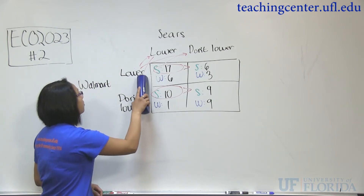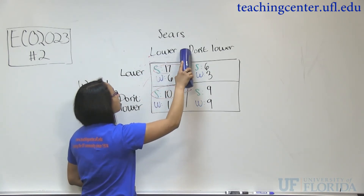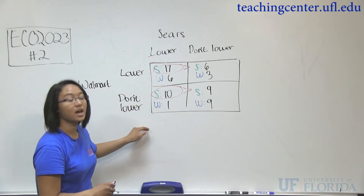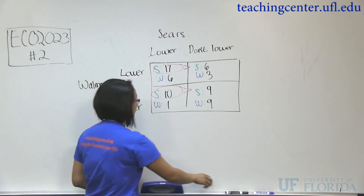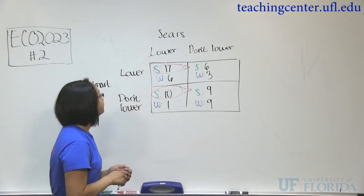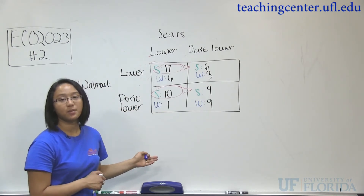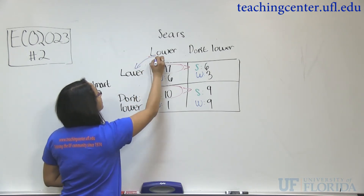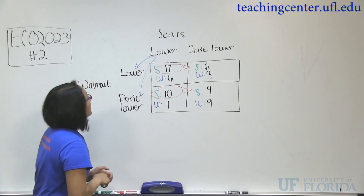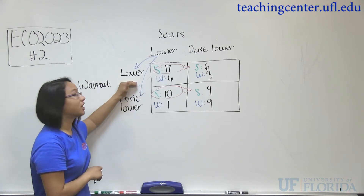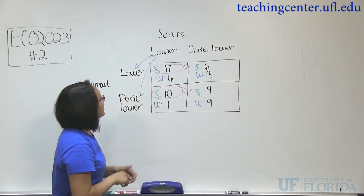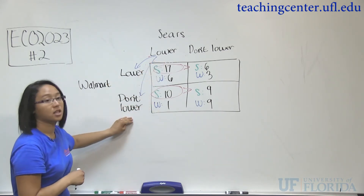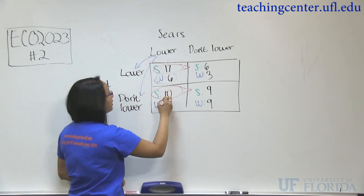Now let's see if Walmart has a dominant strategy. Since Walmart on this game theory matrix is on the horizontal axis, we need to compare the rows and not the columns. Now we're going to compare the W's for Walmart's profit. Remember, we're in an oligopoly market and Walmart is going to respond to whatever Sears does. Say Walmart sees that Sears is going to lower their prices. If we lower our prices, we can make a profit of 6, or we make a profit of 1 if we don't lower. So if Sears lowers its prices, we're going to lower our prices because 6 is greater than 1.